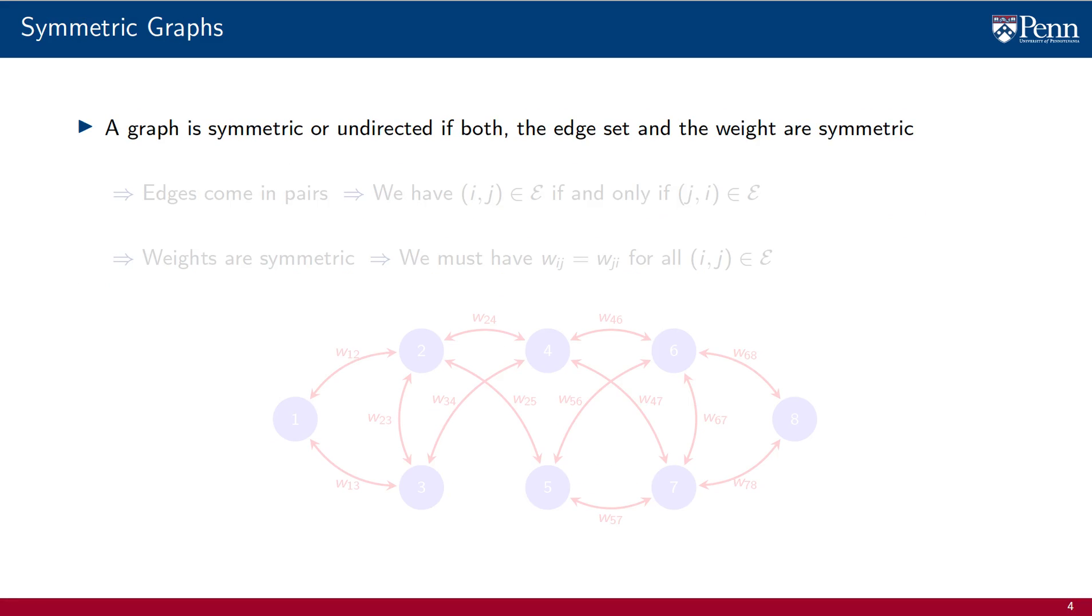When there is no directionality on edges or weights, the graph is said to be symmetric. For this to happen, the edge and the weight set must be symmetric to index transpositions. More precisely, edges must come in pairs. Whenever we have (i, j) being part of the edge set, we must have that (j, i) is also part of the edge set. In this representative graph, an arrow pointing from 3 to 5 implies that we must have the opposite arrow pointing from 5 into 3.